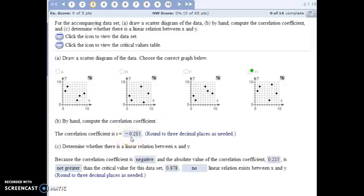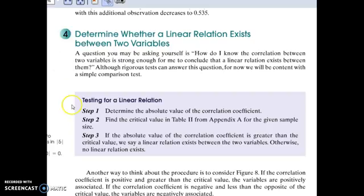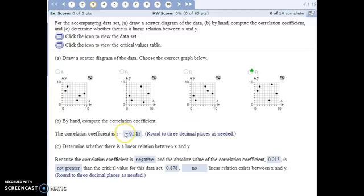We would enter that in. And then to determine if there's a linear relationship or not, let's look at the textbook, page 197. It tells you how to test for a linear relationship. We're going to figure out the absolute value of that correlation coefficient, which we just did in Part B. The absolute value of this is, just make it positive, 0.215.